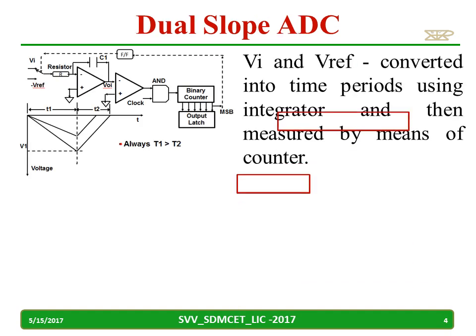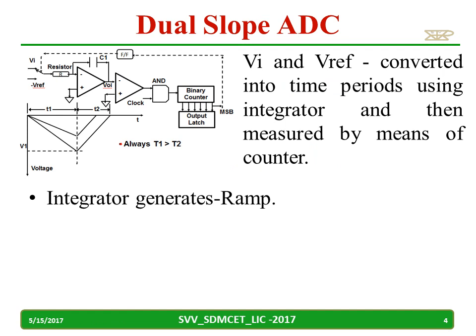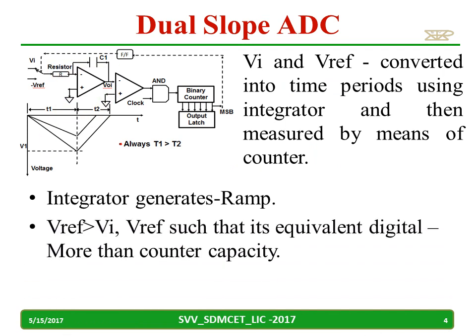In this converter, VI and V reference are converted into time periods using the integrator, and then measured by means of a counter. The integrator generates the ramp. The V reference we choose is always more than VI, and its equivalent digital value should be more than the counter capacity.